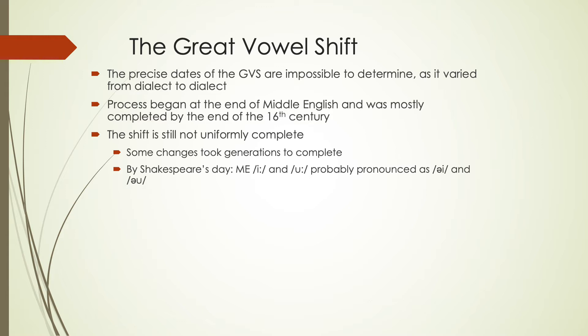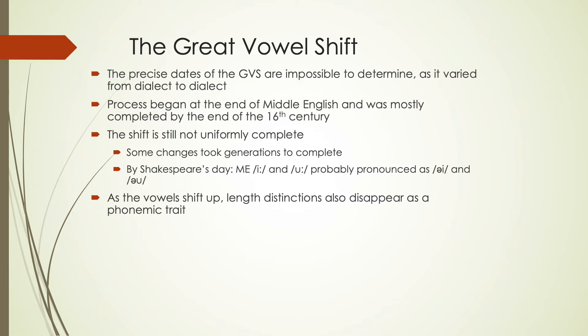In Shakespeare's time, you would have seen a lot of things in process. The EE and OO sounds were probably starting to become diphthongs but would have been more like an OI sound rather than dropping all the way to an AH for that first sound like we have today. As these vowels shifted up, the length distinctions also disappeared — length in vowels is no longer going to be phonemic. We don't have a difference between long and short vowels that contributes to meaning.